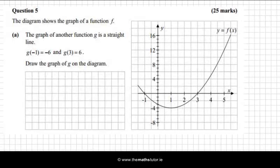Hi, Fergal here. In this video, I'm going to give you a typical project maths exam type question. In it, we're given the graph of a function f. We're told that the graph of another function g is a straight line, and we're given the input and output for two different points: g(-1) = -6 and g(3) = 6.